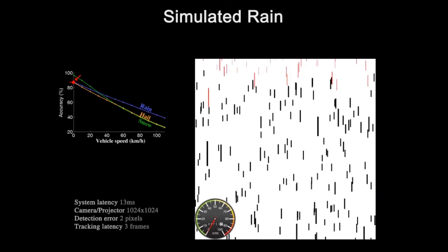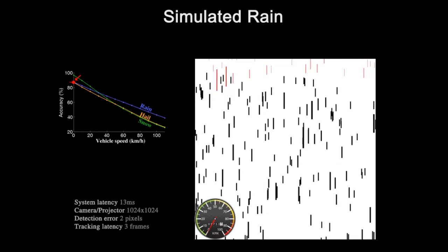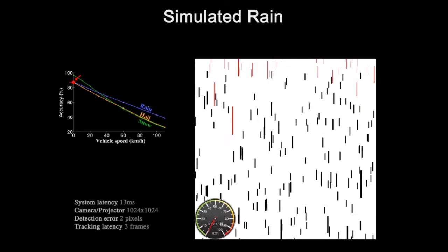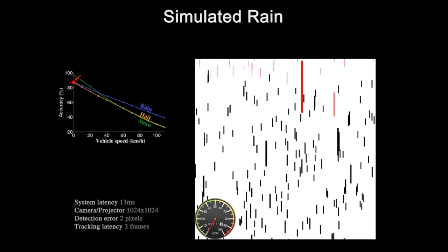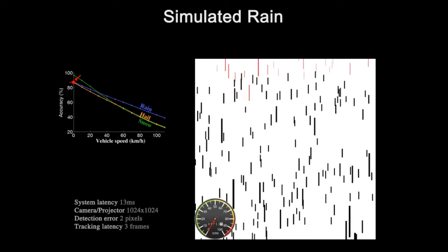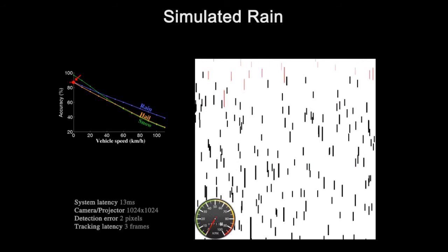This first example is a simulation with a stationary camera. Black streaks are the drops successfully not illuminated. The red streaks at the top are drops that the system has not yet recognized.